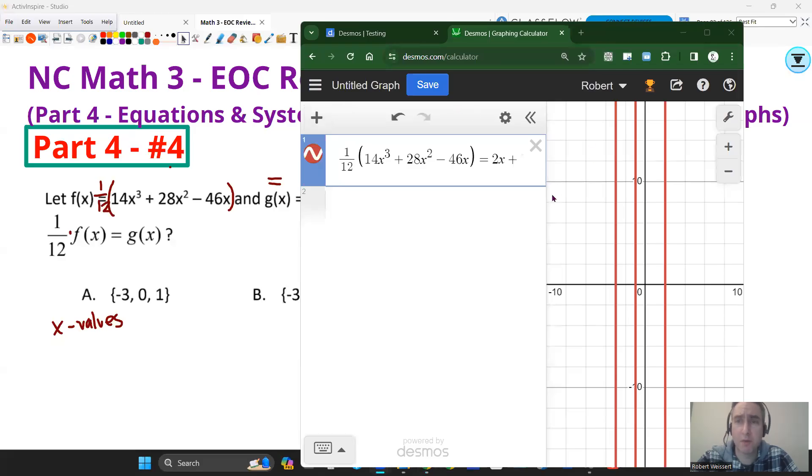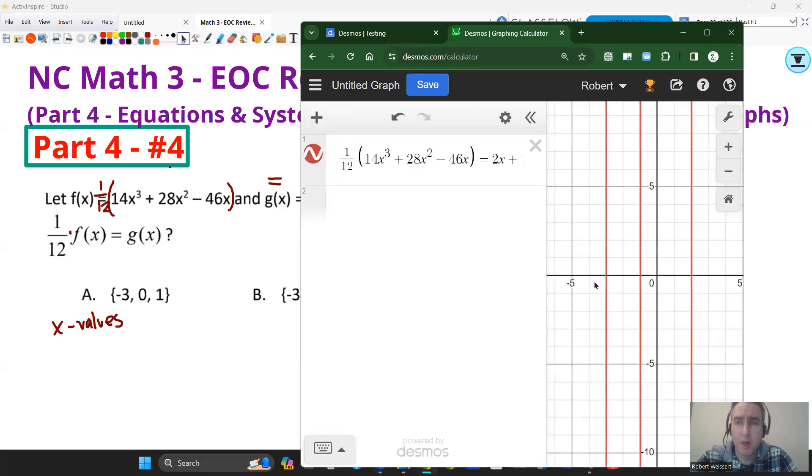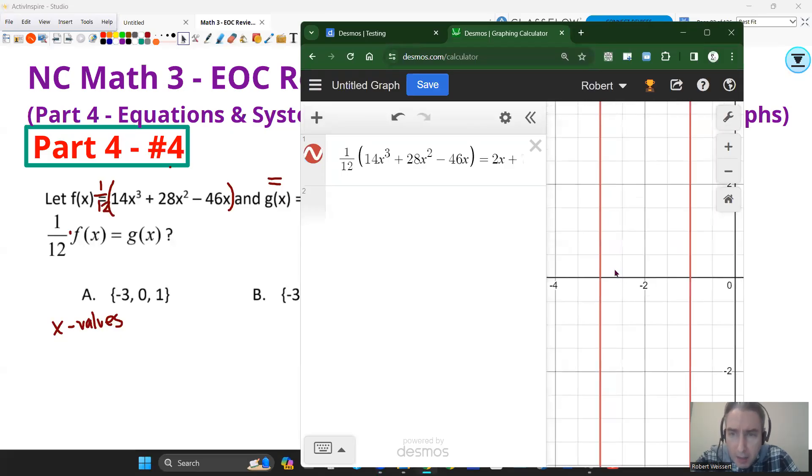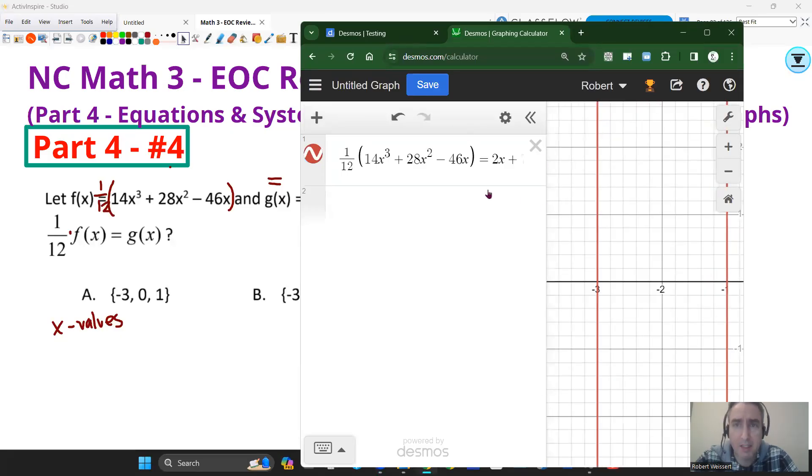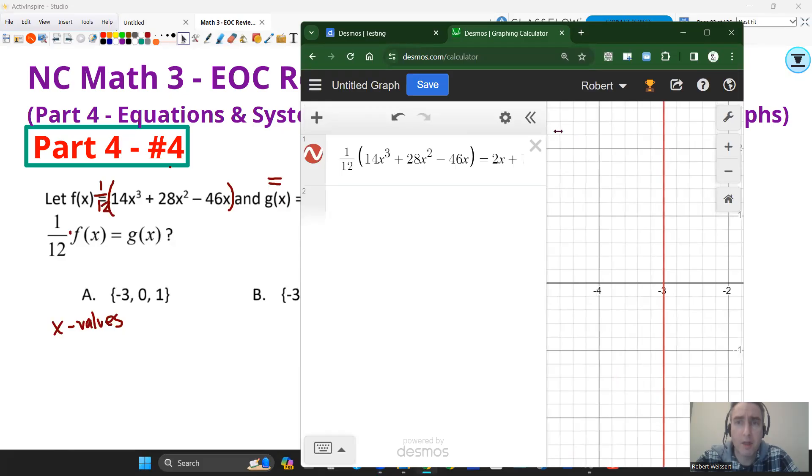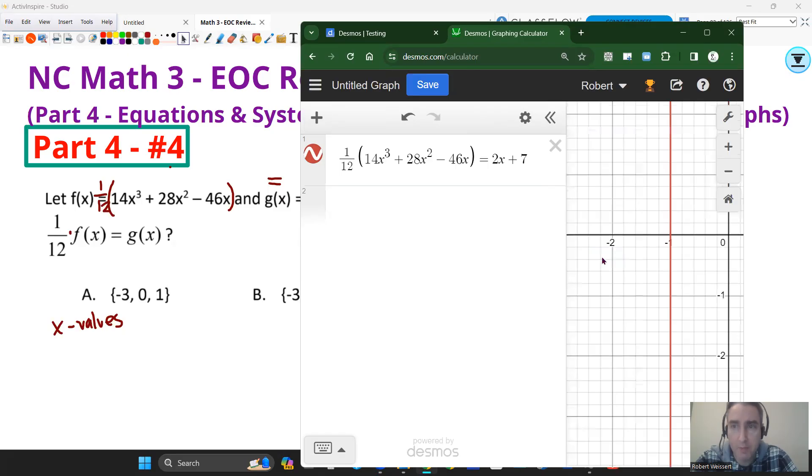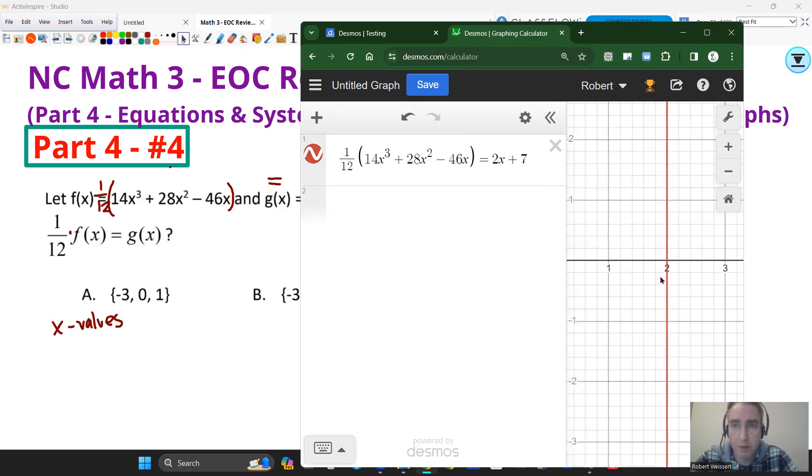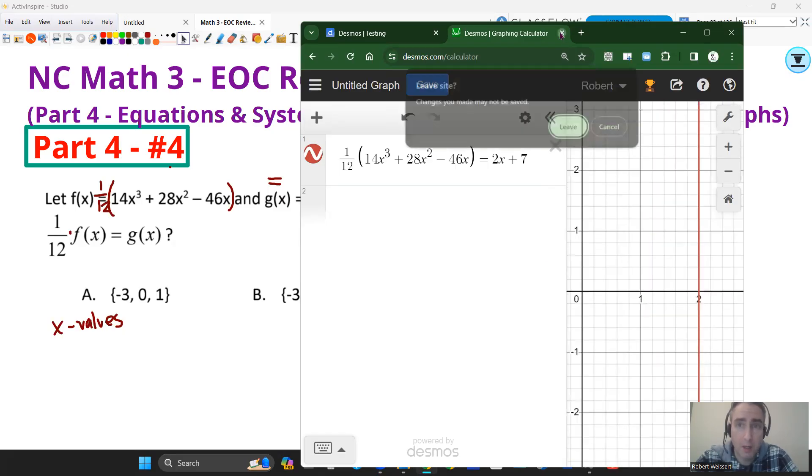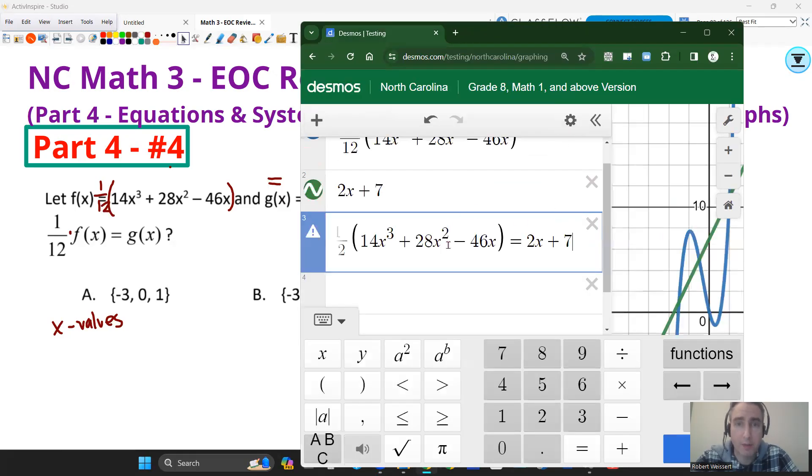On the non-tested Desmos version, which a lot of you probably have used, you could probably go through and say, all right, if I just put the equation in as I see it without really thinking too much about what the graphs look like, I see what crosses at -3, -1, and 2, and those are my answers. And those are the answers. You just can't get away with doing it on the tested version. So you have to do the workaround with the two intersections of the graphs.